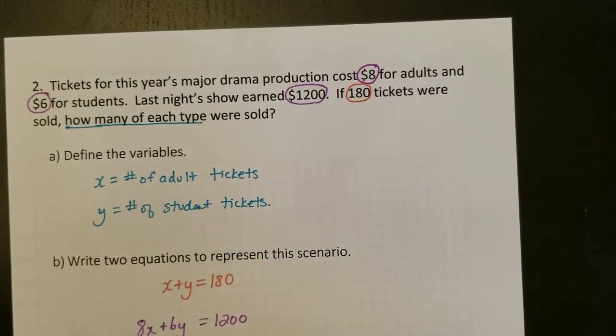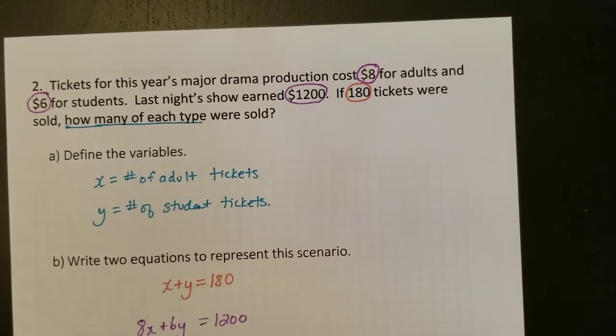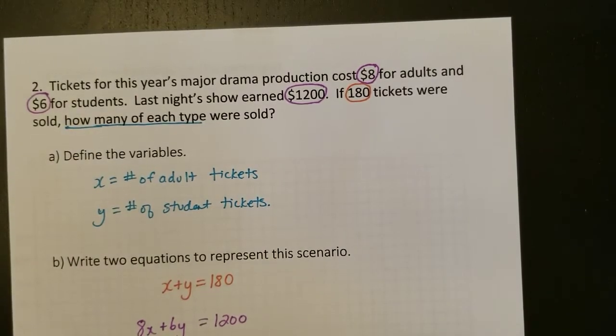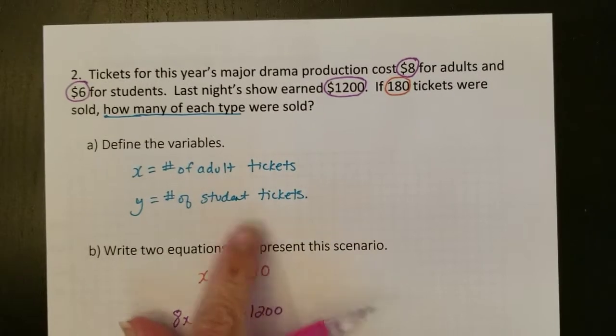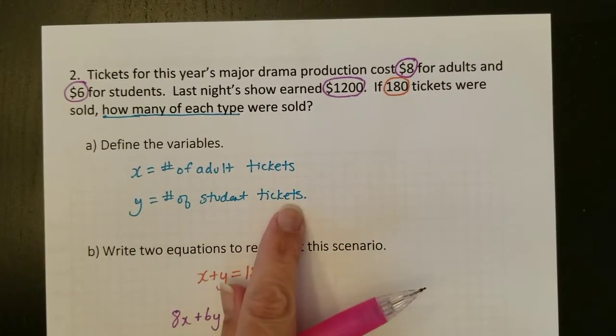So the first step to any of these types of questions is to define your variables. This is really important for math communication to tell what your X or your Y, or if you're using other letters like A for adults and S for students, what those letters are going to represent. So here, I've said X is the number of adult tickets, Y is the number of student tickets.